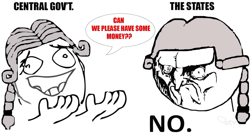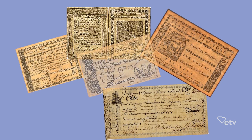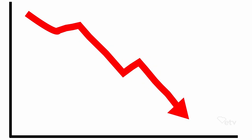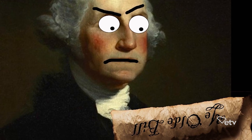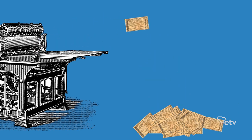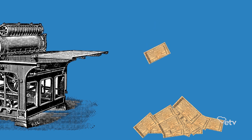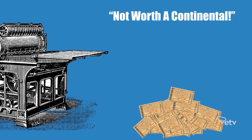Congress did not have the authority to tax, and the states were unwilling to give money to support the central government. There was no national currency either, for each state had its own printed money. Due to these issues, there was no stable national economy, and it became clear to the Founding Fathers that the debt from the Revolution could not be repaid. The mass printing of paper notes, then known as Continentals, caused inflation. The states ended up printing so much money that the value of the Continental became worthless — that's where the saying "not worth a Continental" came from.